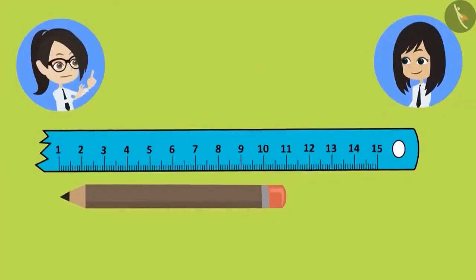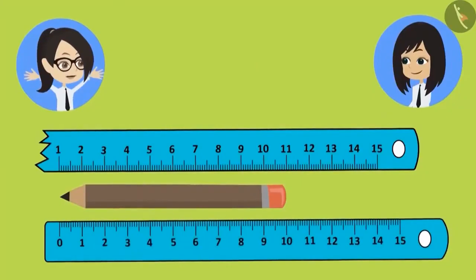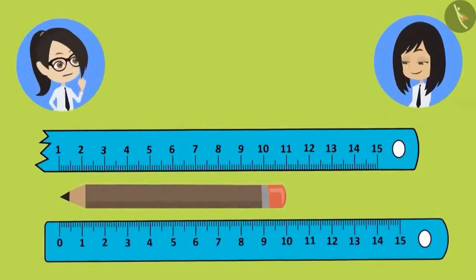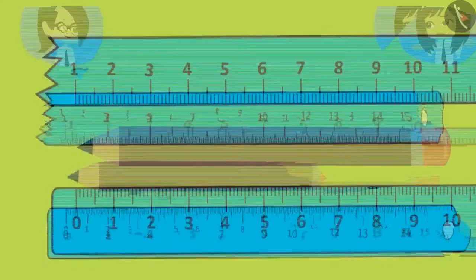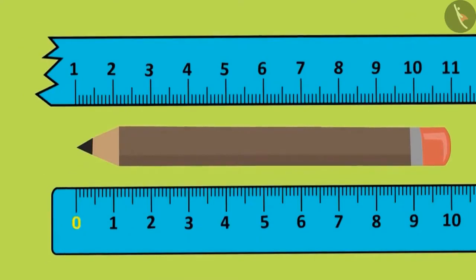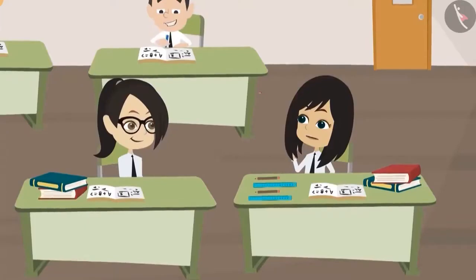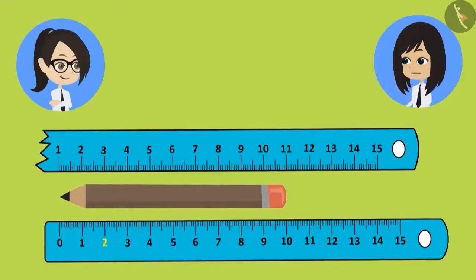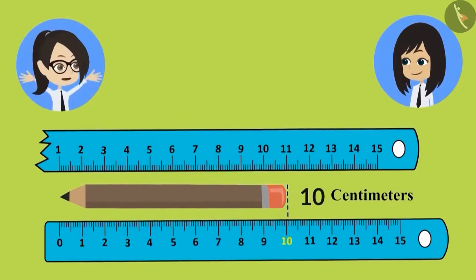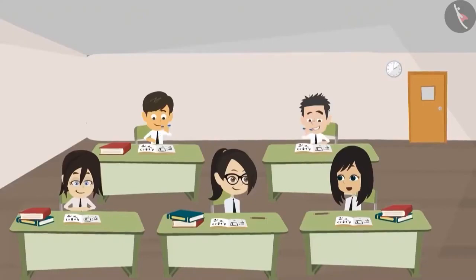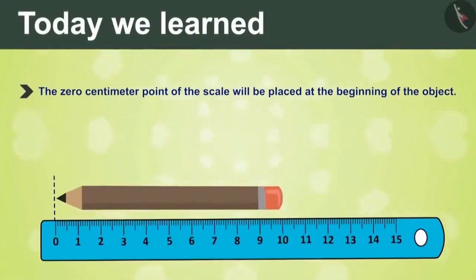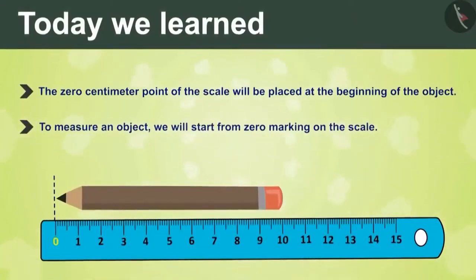They realize the mistake: the broken scale starts at 1, not 0. The rule is that even with a broken scale, you must start counting from 0. Starting from 0 on the broken scale gives the correct answer of 10 centimeters. Two rules to remember: place the 0-centimeter point at the beginning of the object, and always start counting from the 0 marking on the scale.